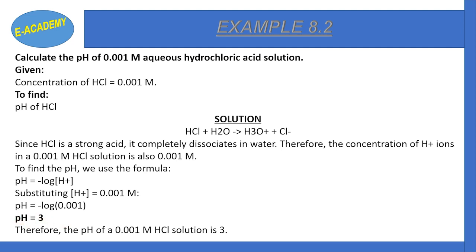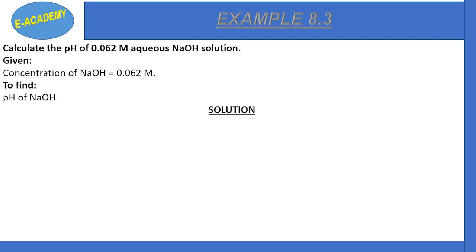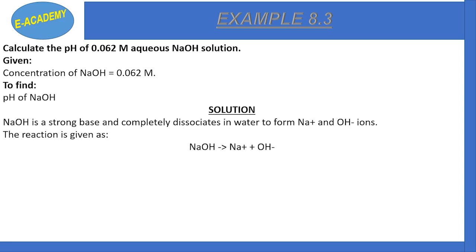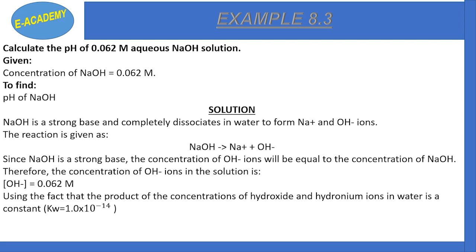Example 8.3: Calculate the pH of a NaOH solution with molarity 0.062 molar. NaOH → Na⁺ + OH⁻. Since NaOH is a strong base, the OH⁻ concentration equals the concentration of NaOH. Therefore, OH⁻ ion concentration = 0.062 molar.